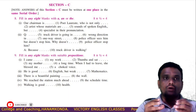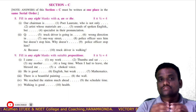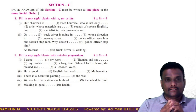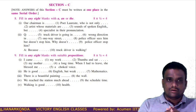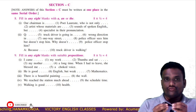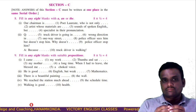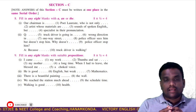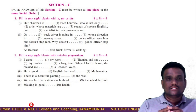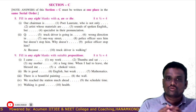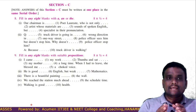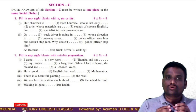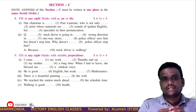Section C. Note that section C answers must be written at one place. The 8th bit is about articles — 'a' and 'the'. Here are 10 questions; if you answer 8 of them successfully, you will be awarded 4 marks. Each question carries half a mark. Articles can give you 4 marks. The 9th bit is about prepositions. Here are 10 questions; if you answer 8 of them correctly, you will be awarded 4 marks.